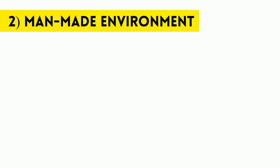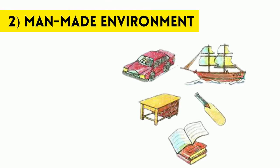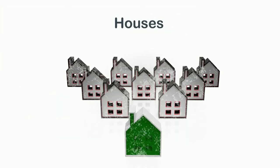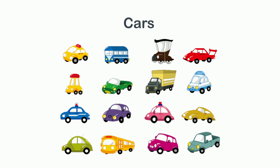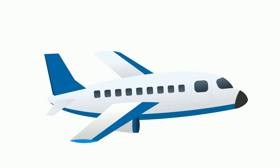The other kind of environment is called man-made environment because it involves the objects that are produced by humans, such as houses, cars, aeroplanes.